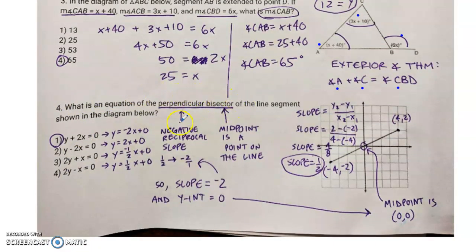For number 4, what is an equation of the perpendicular bisector? As soon as you see perpendicular, it means negative reciprocal slope. As soon as you see bisector, it means the midpoint, which is a point on the line, which means first you find the midpoint, then you find the slope, then you take that slope and turn it into its negative reciprocal.